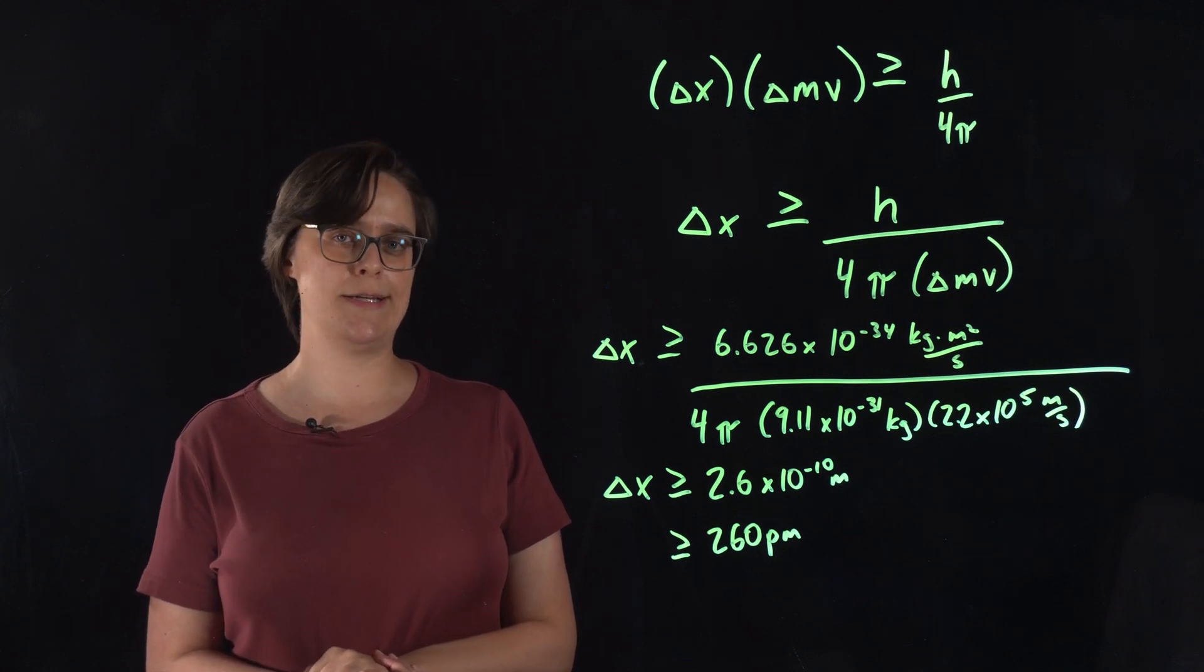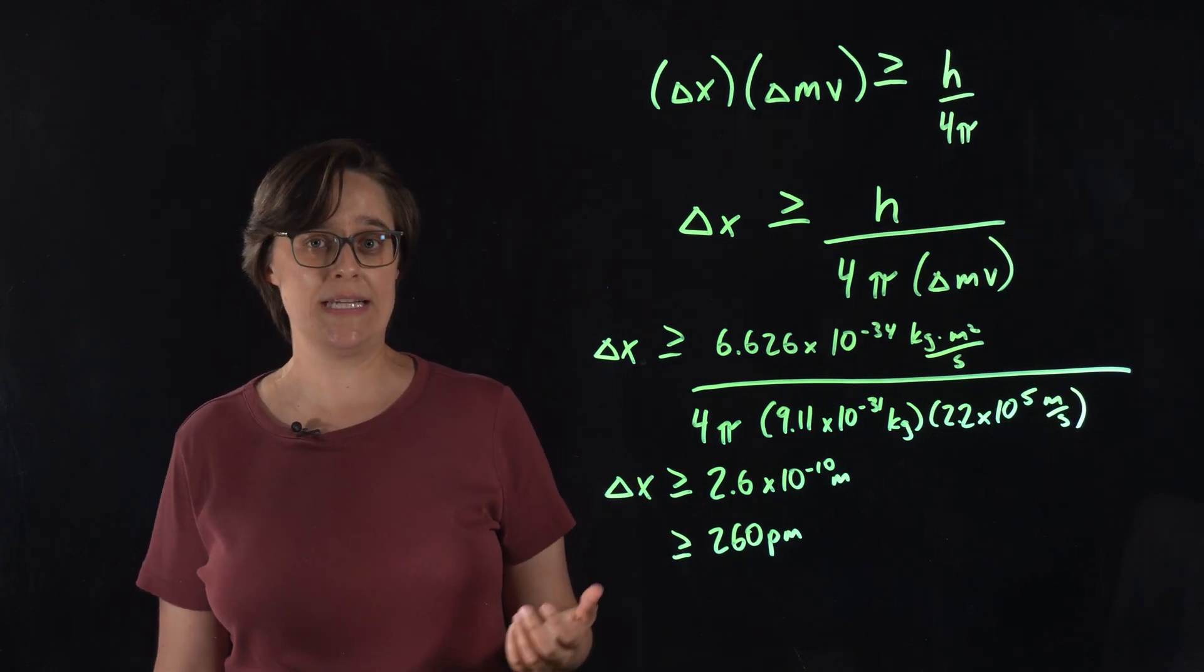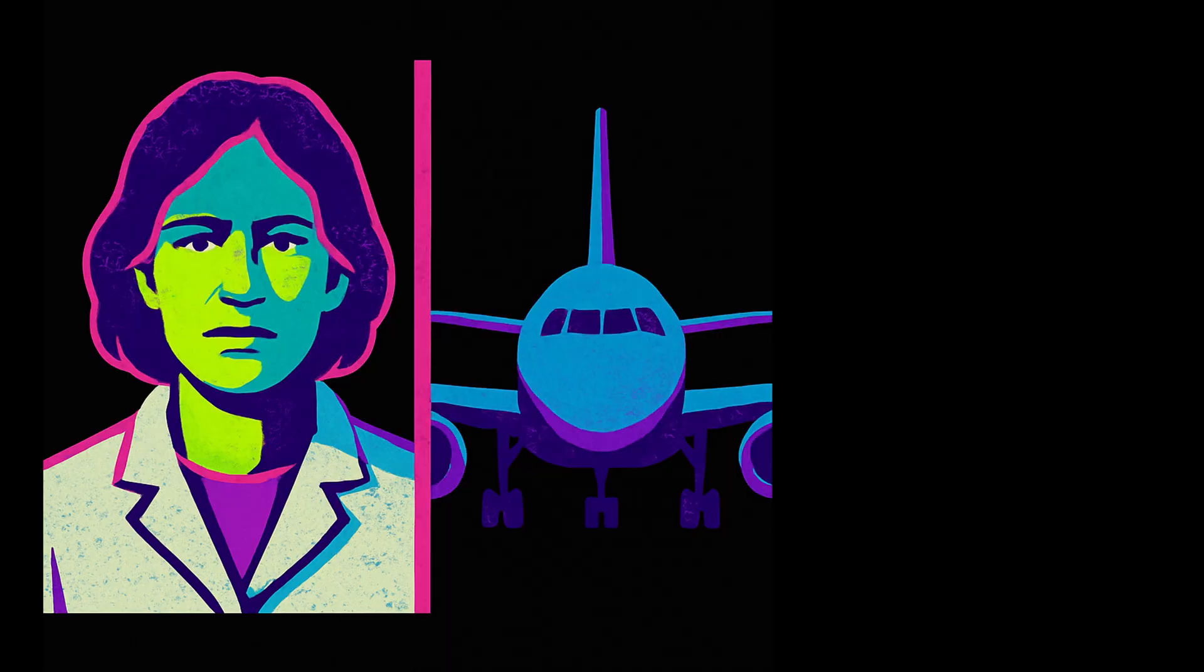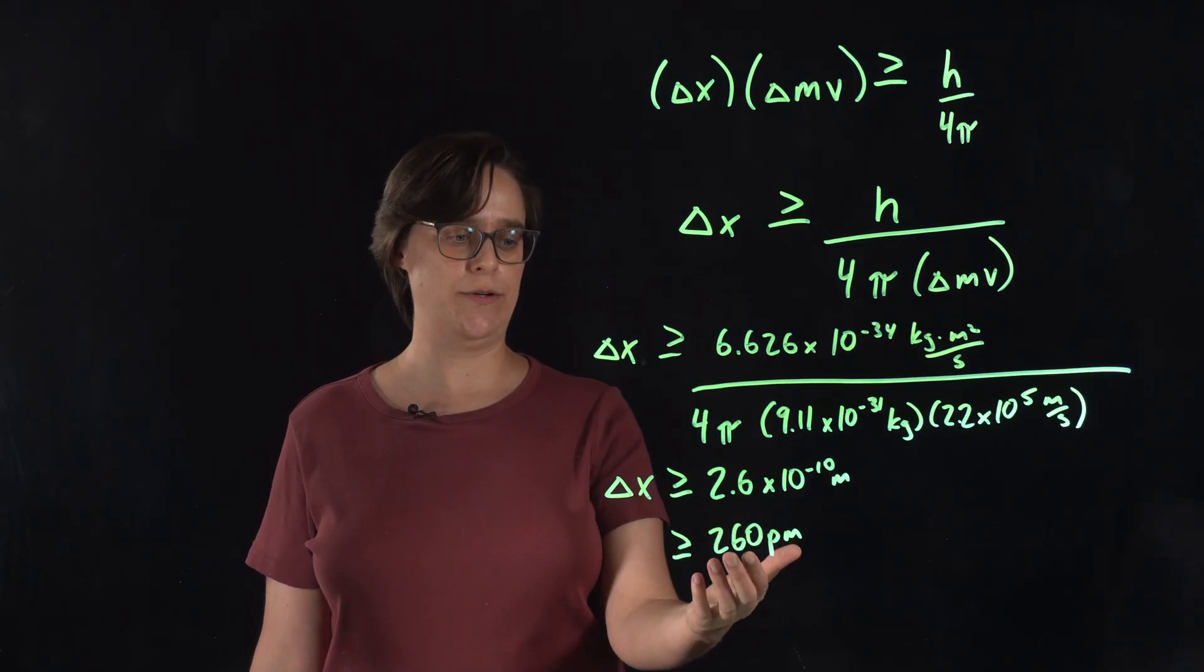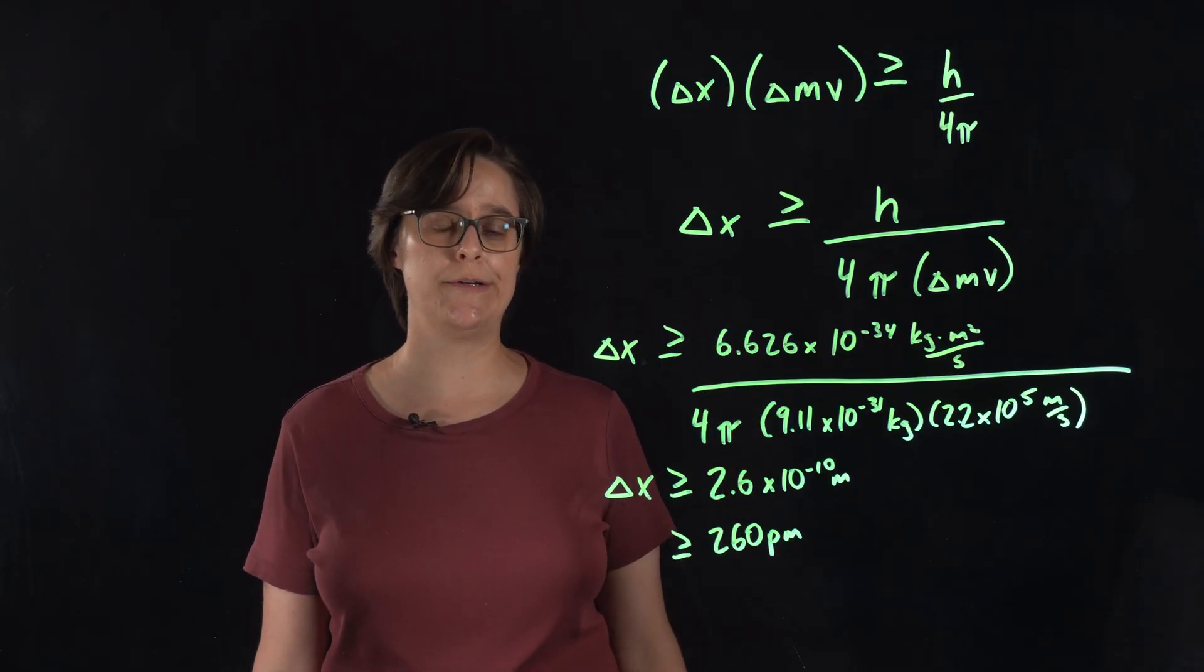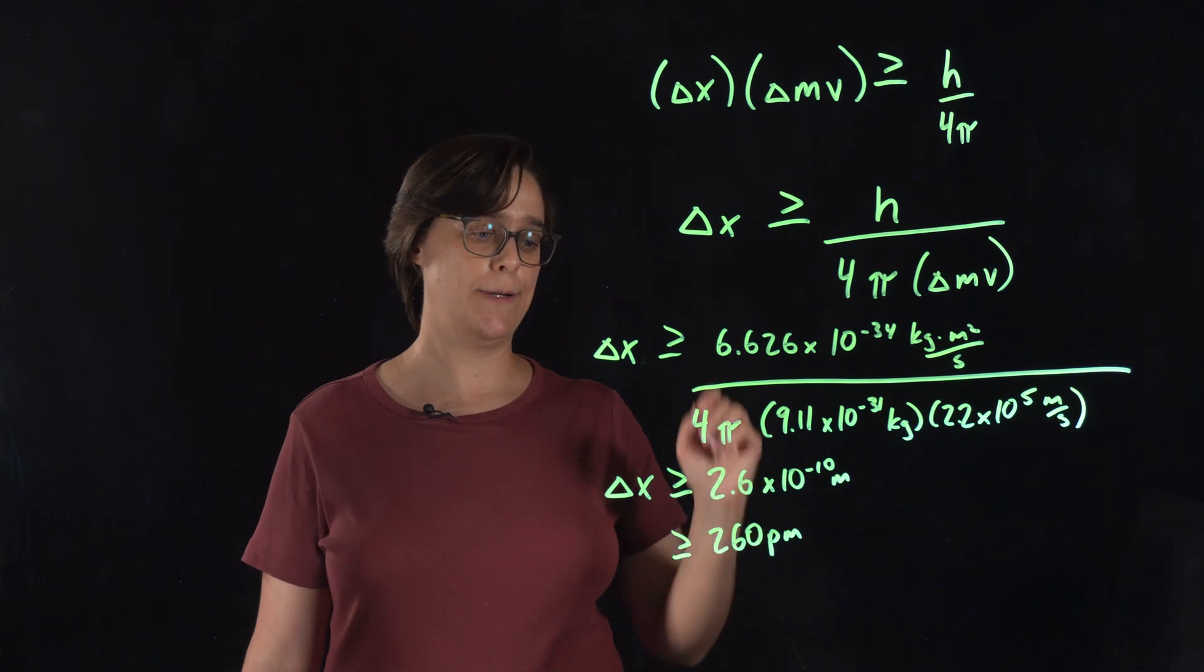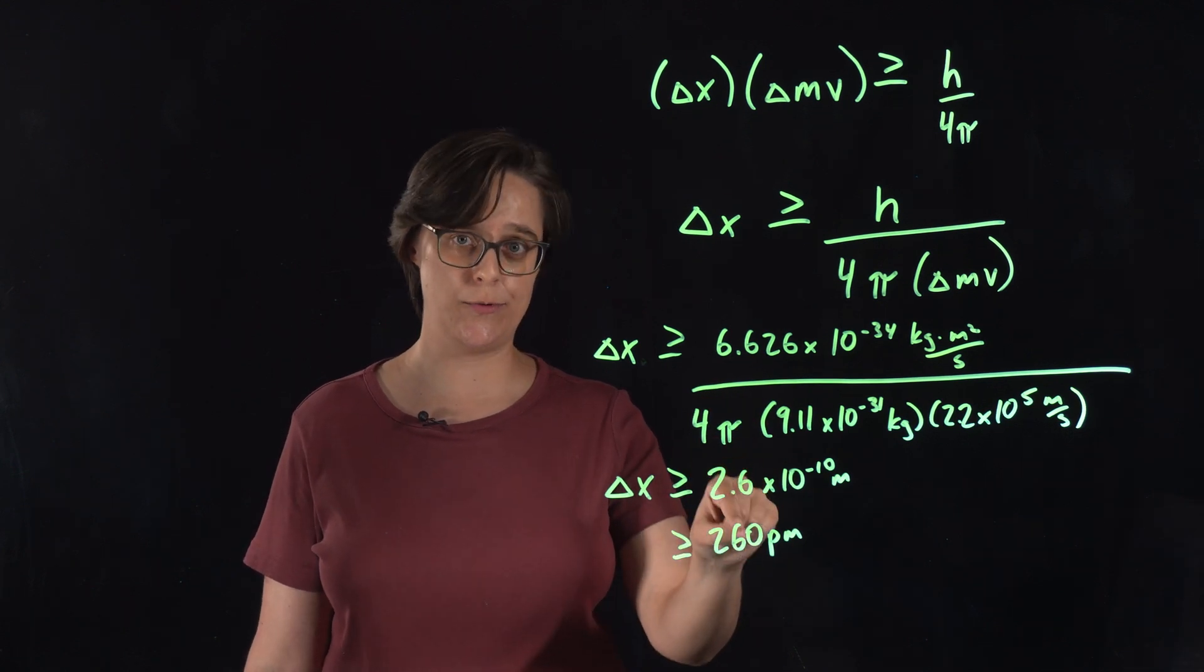Now that is absolutely tiny. If I'm talking about the uncertainty in the position of a person, or an airplane, or even something tiny like a grain of sand, being uncertain by 260 picometers does not matter. But on the atomic scale, this is huge. The radius of a hydrogen atom is only 53 picometers.